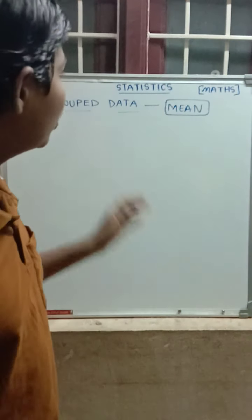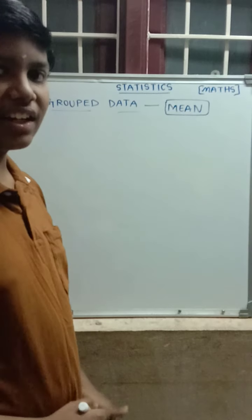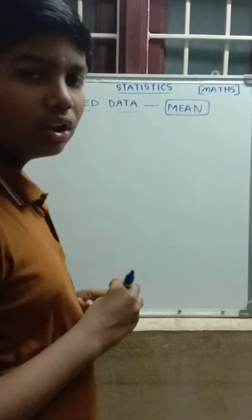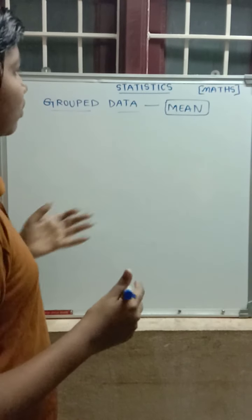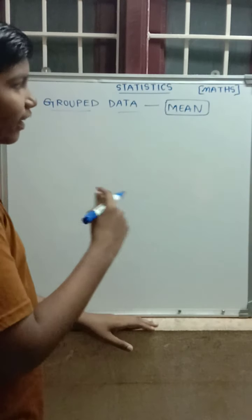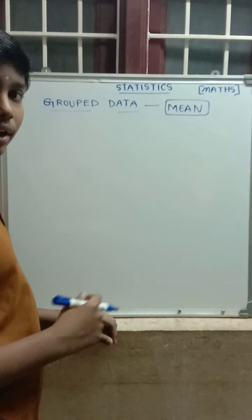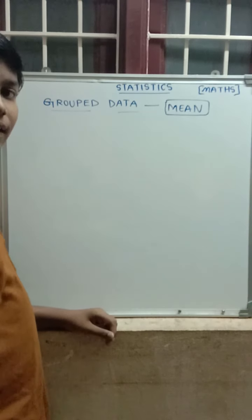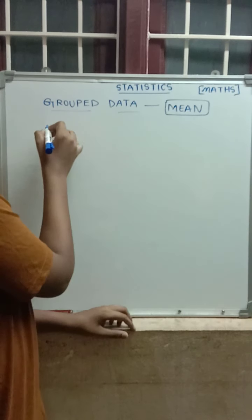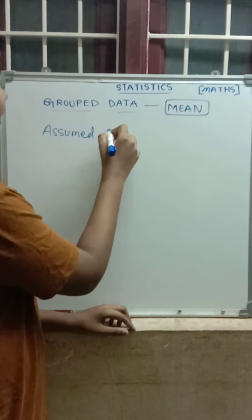Hi everybody. Today I am going to explain mean in grouped data — that is the second method of finding the mean. As in the grouped data first video, I said about the direct method. I also said that mean can be found by three methods: direct method, assumed mean method, and step deviation. In this video, I am going to show how to calculate the mean by the assumed mean method.